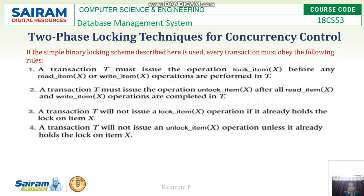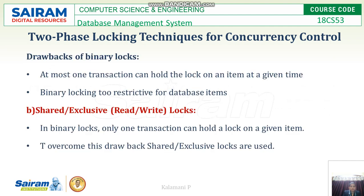For the simple binary locking scheme: a transaction T must issue lock_item(X) before any read_item(X) or write_item(X) operations. A transaction T must issue unlock_item(X) after all read and write operations on X are completed. Transaction T will not issue lock_item(X) if it already holds the lock, and will not issue unlock_item(X) unless it already holds the lock on item X.